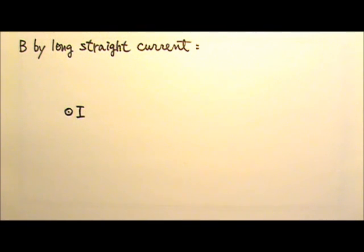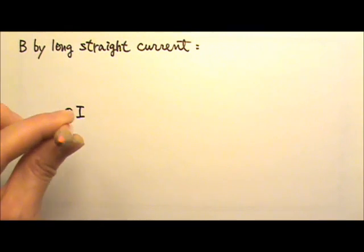In the second magnetism lesson we talked about magnetic field lines produced by a long straight current. Let's say we have this long straight current I. The dot with a circle around it tells us that the current comes out of the page like this.